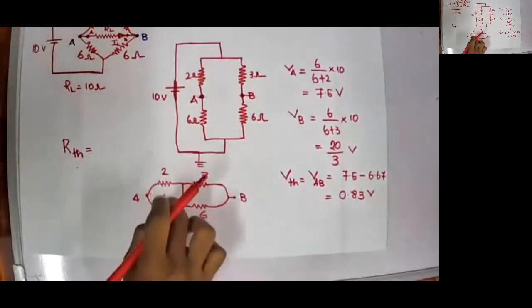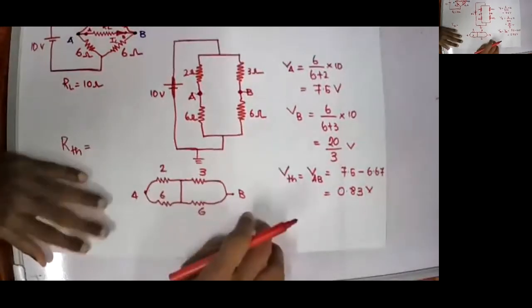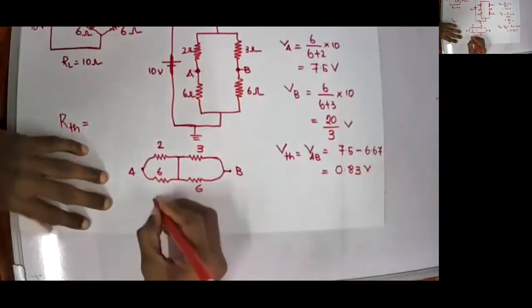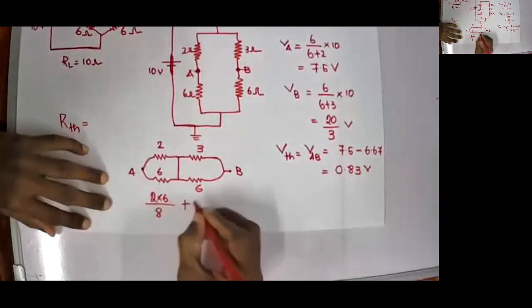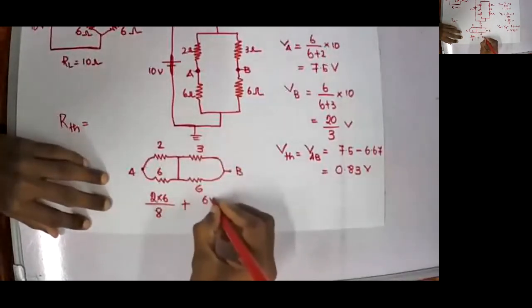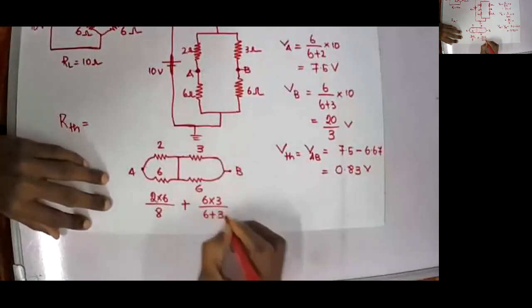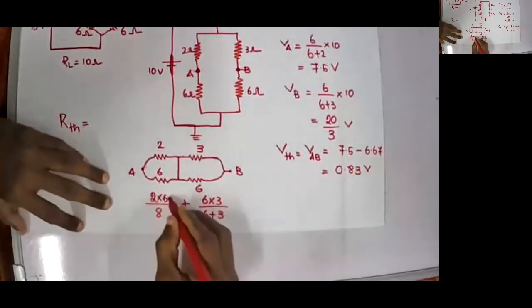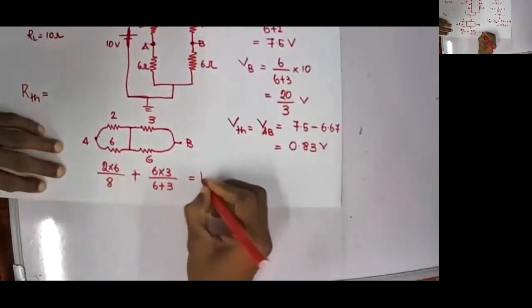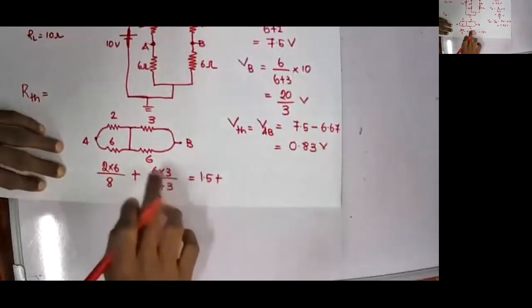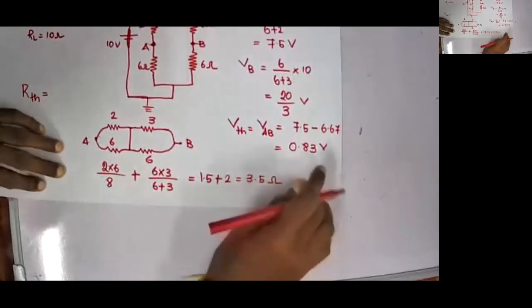So 2, 6 in series, sorry in parallel, 3, 6 in parallel and again those two are in series. So this one will be 2 into 6 divided by 2 plus 6, plus 6 into 3 divided by 6 plus 3, which is 9. 18 by 9. So 2 into 6, 12 by 8. It becomes 1.5 plus this becomes 18 by 9, 2 which is 3.5 ohms.